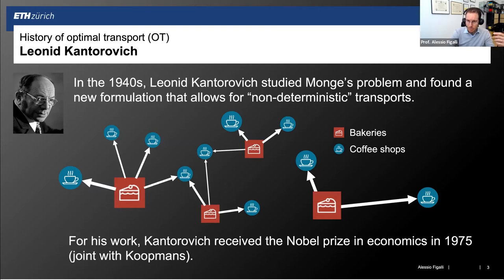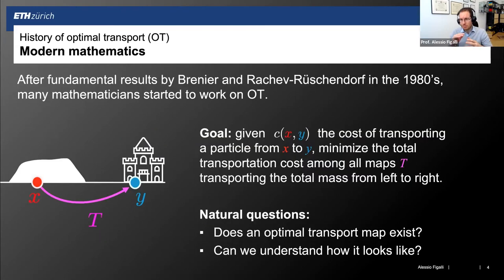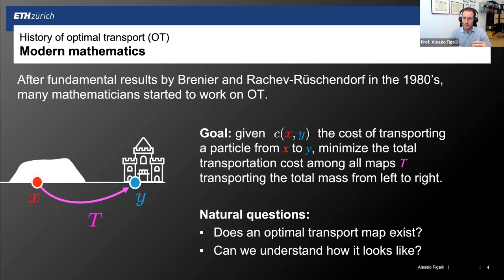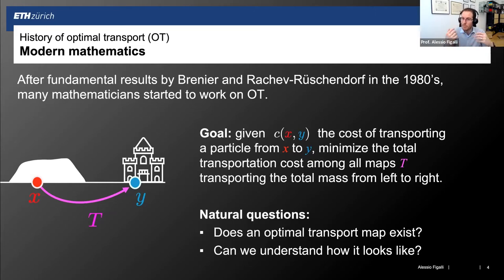This remained still an economics problem. In order to become a mathematical problem, we had to wait still for order 40 to 45 years, with Brenier and Rachev, who provided the first really deep mathematical theorems that allowed people to get interested in it. Mathematicians were missing the richness of the problem. It's through the contribution of these mathematicians that people realized that optimal transport could be more than a simple economic problem.